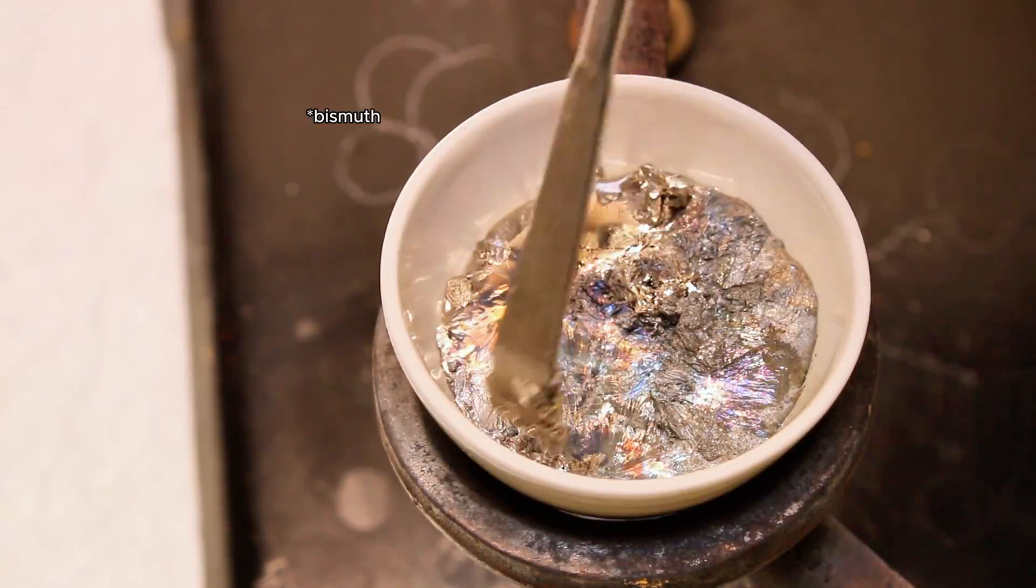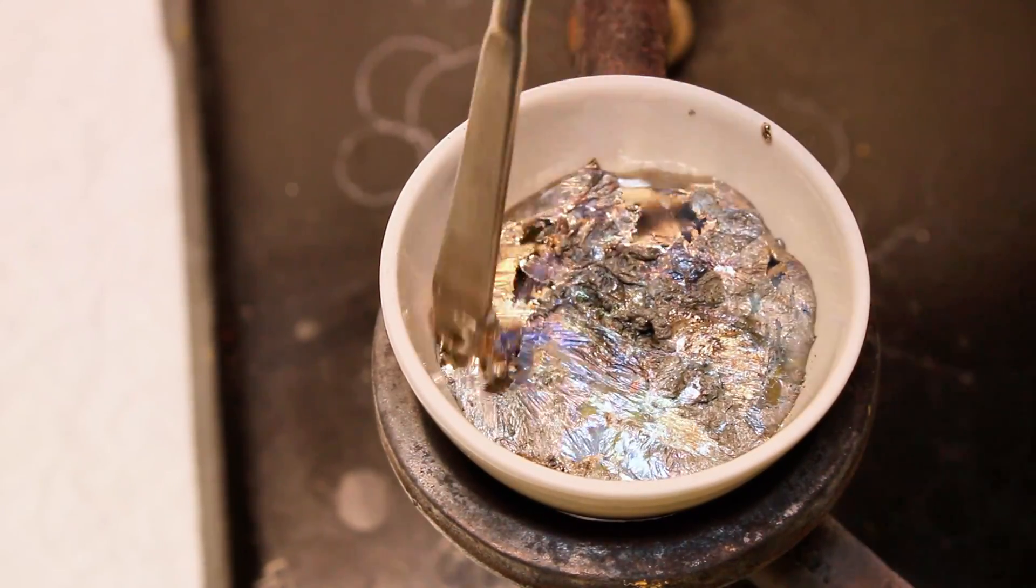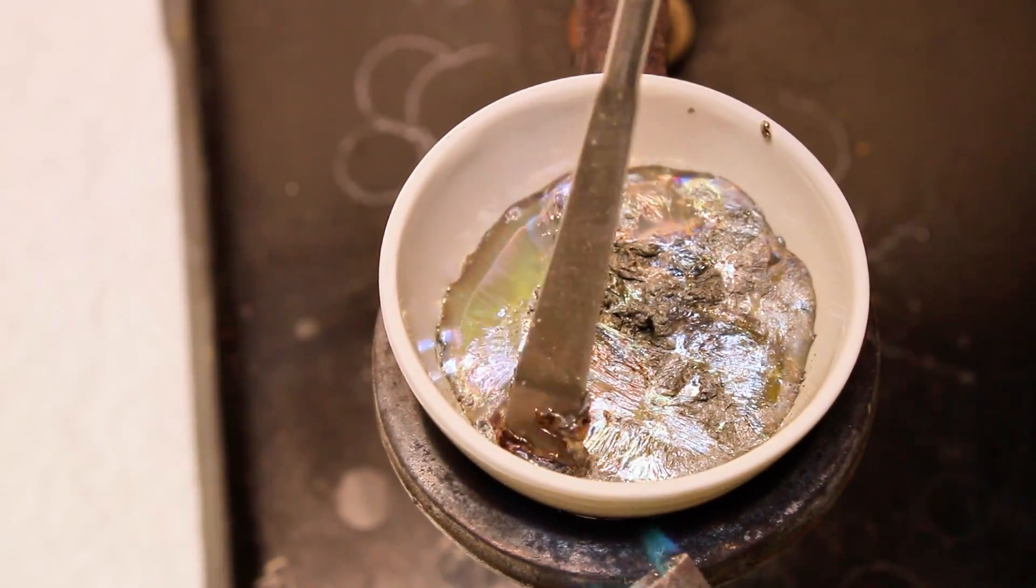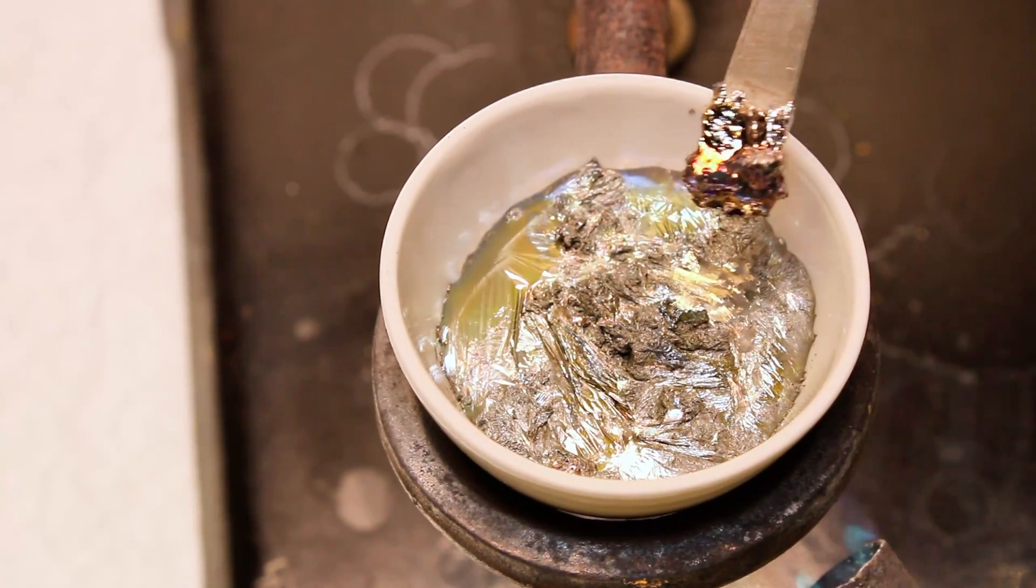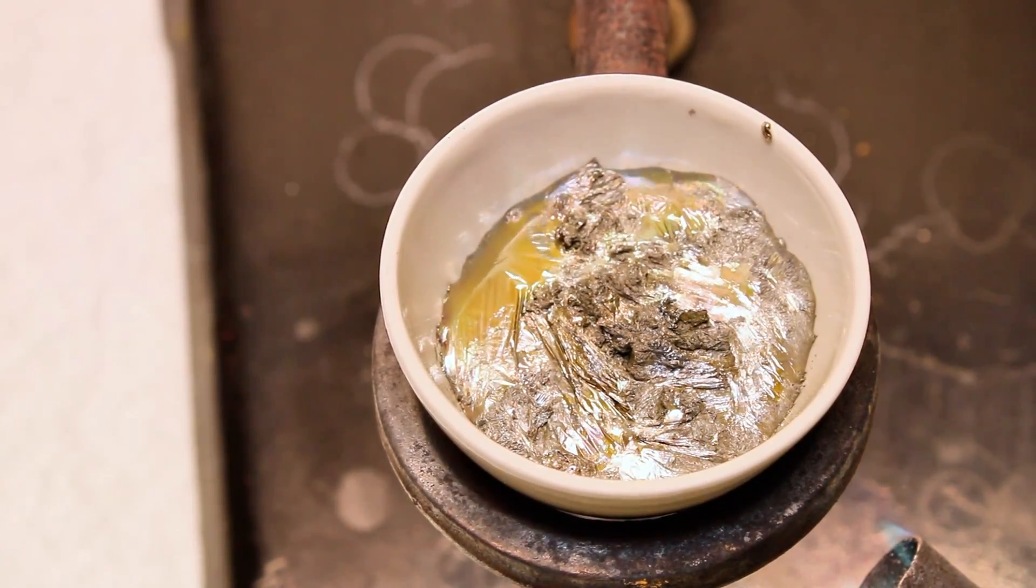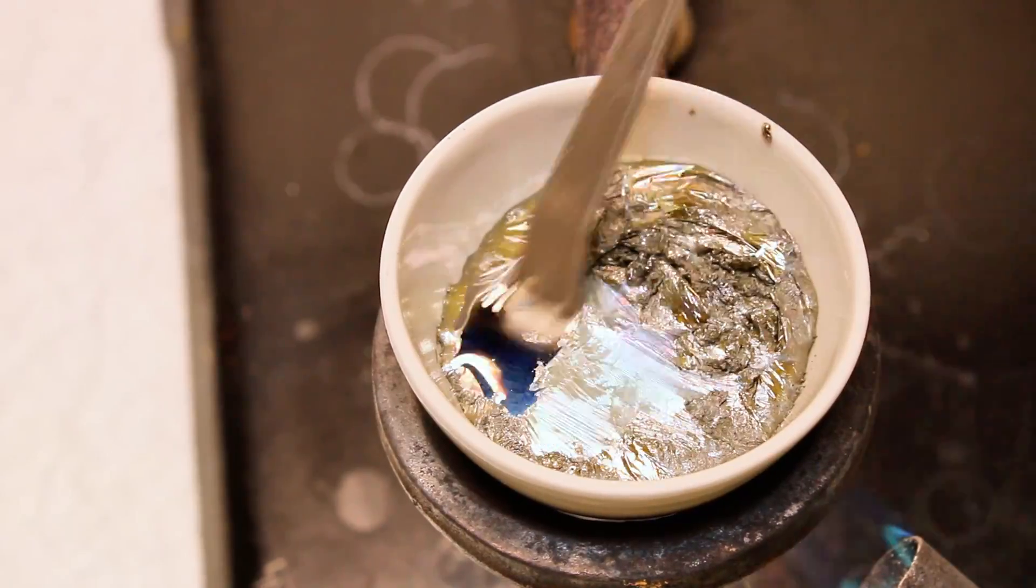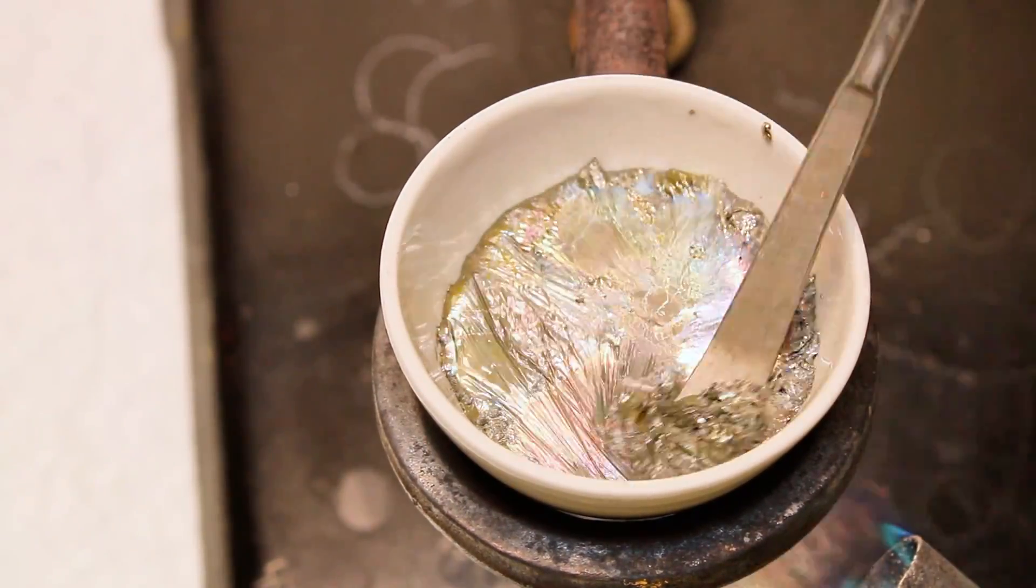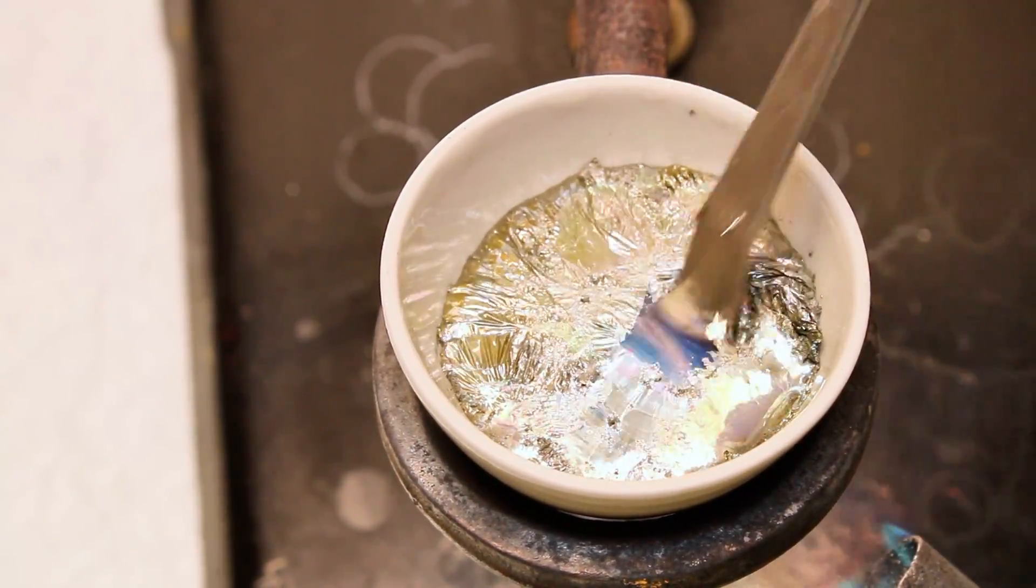Once all the bismuth had liquefied, I scraped the slag off the surface and allowed it to cool down slowly for about five minutes to allow crystals to form. The amount of time you want to wait to allow crystals to form is super variable and really depends on how much bismuth you're crystallizing, as well as the ambient temperature.